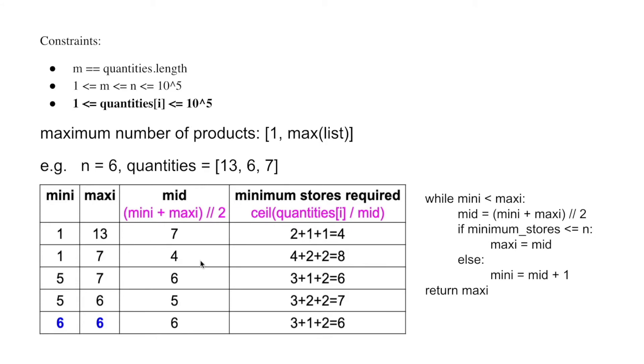Then the new mid is 4. The minimum stores required becomes 8. 8 is bigger than the stores that was given, so for sure 4 is too small. We change the lower limit to mid plus 1.